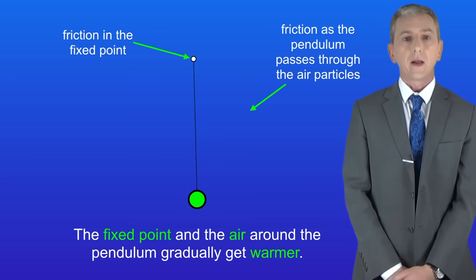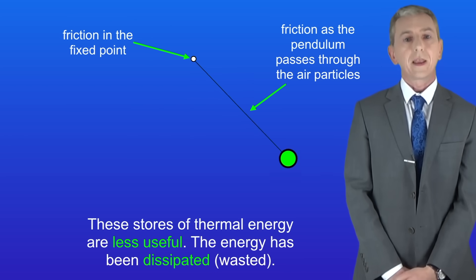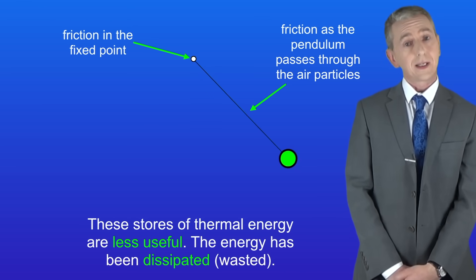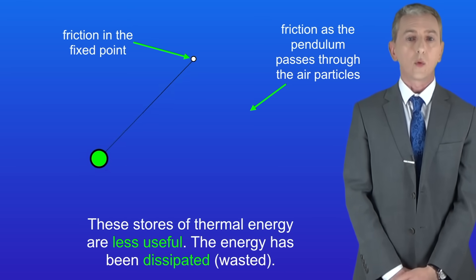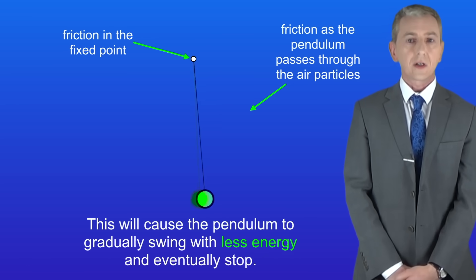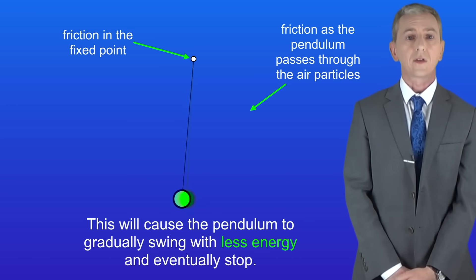The fixed point and the air around the pendulum gradually get warmer. These stores of thermal energy are less useful. Scientists say that the energy has been dissipated. In other words it's been wasted. This will cause the pendulum to gradually swing with less energy and it will eventually stop.